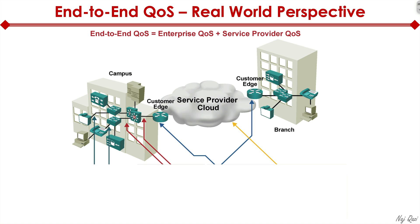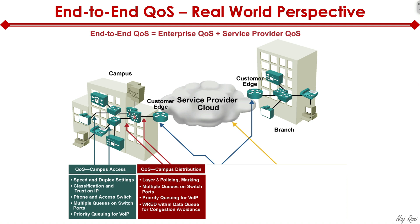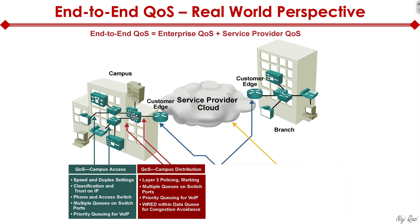The first place to configure QoS is campus access: set up speed and duplex settings, classification and trust on IP phone and access switch, multiple queues on switch ports, and priority queuing for VoIP. Next is campus distribution: layer three policing and marking, multiple queues on switch ports, priority queuing for VoIP, and weighted random early detection on data queues for congestion avoidance. The third place is WAN edge: define your SLA, classification and marking, LLQ (low latency queuing), and link fragmentation and interleaving.